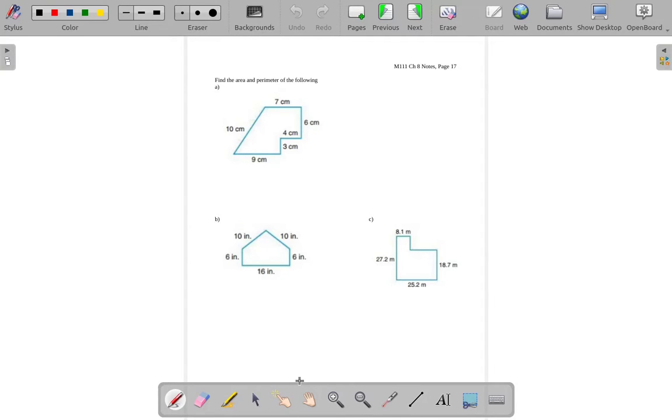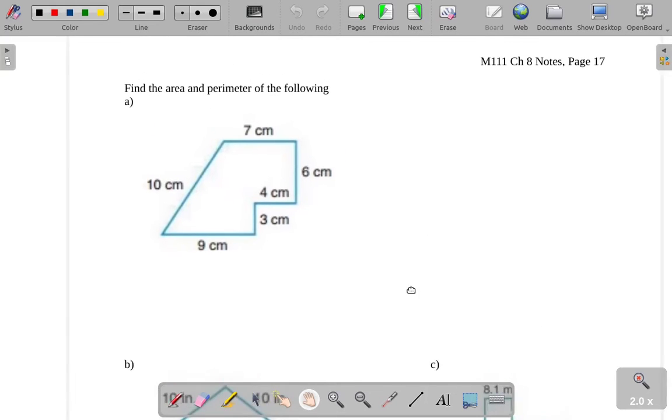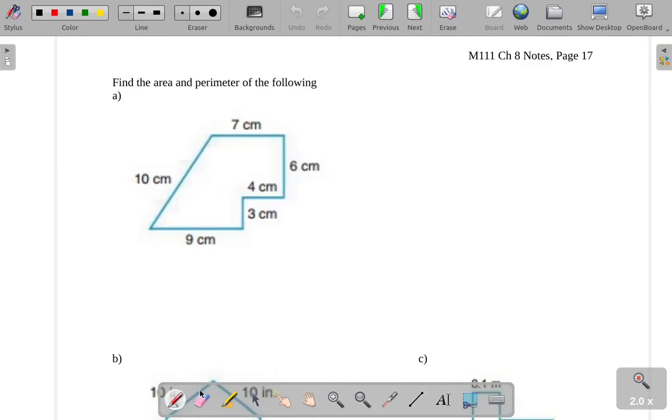Let's find the area and perimeter of some strangely shaped figures. These are polygons, but there are no specialized formulas for polygons that look anything like these.